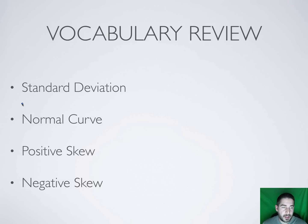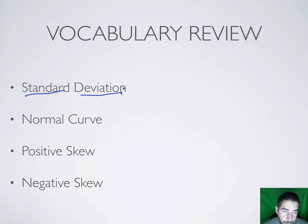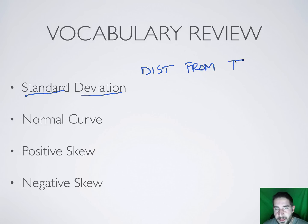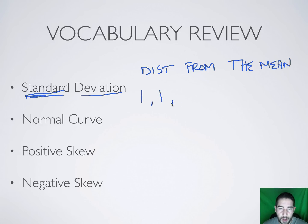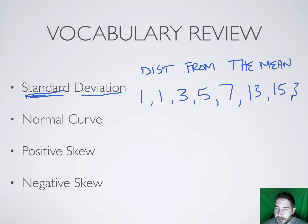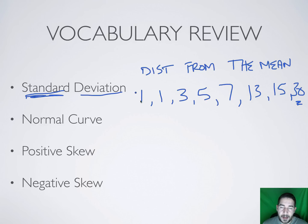Now we get a little more difficult. The main non-basic concept we need in psychology is standard deviation. Standard deviation is the distance from the mean. If you have a data set like 1, 1, 3, 5, 7, 13, 15, 30 — a big range — your standard deviation is going to be higher. The more spread out the numbers are, the more variation you have and the higher your standard deviation will be.